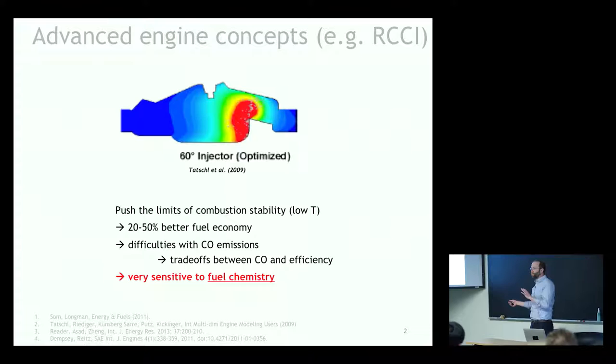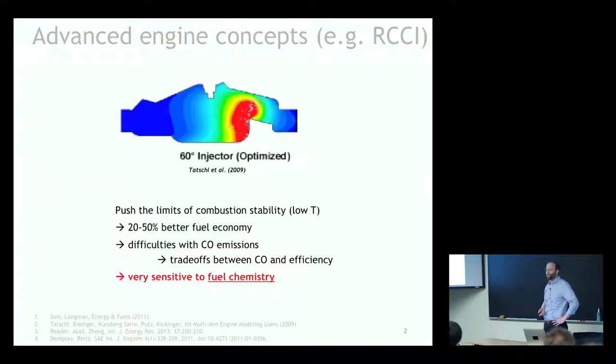Our 15-second motivation: there's a whole bunch of engine concepts that become possible when you start really pushing the limits of combustion stability. It turns out you can get to much better fuel economies — that's not insignificant when you consider that 85% of our current energy usage in the United States comes from combustion. If we can get 20% to 50% better fuel economy, that's a very large dollar sign.